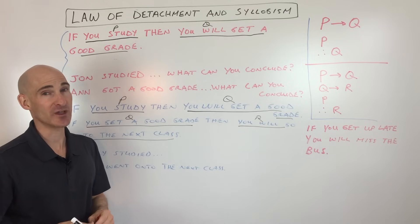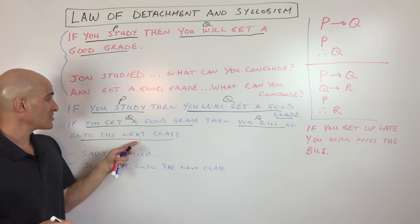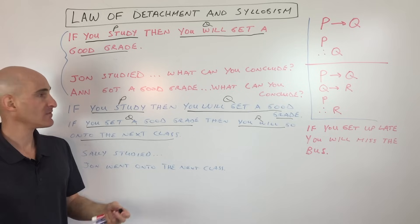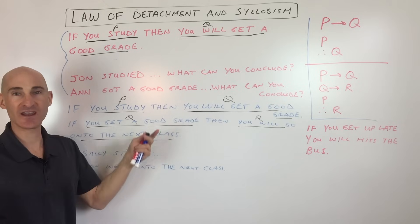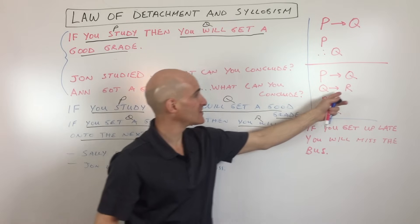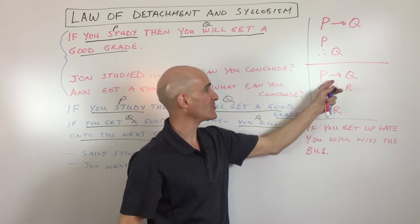This is an invalid argument. So John went on to the next class, no conclusion. We really don't know if he studied, if he got a good grade, if any of these other things happen. That's going against the direction of these arrows.